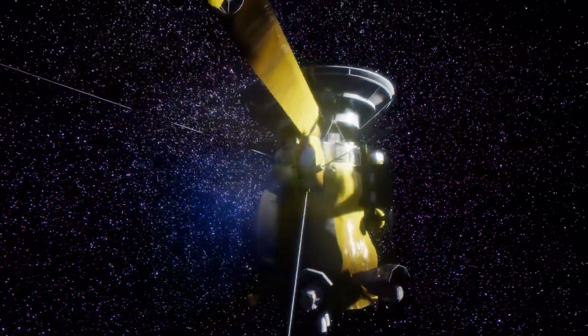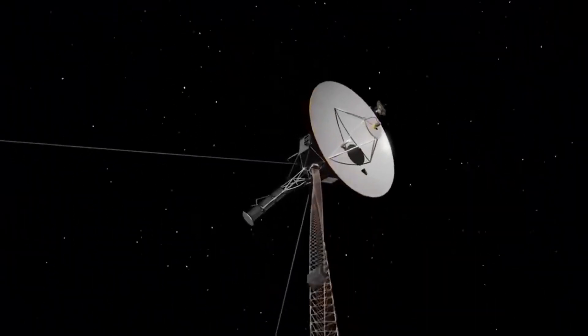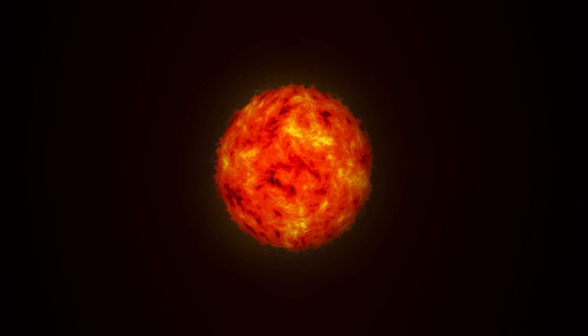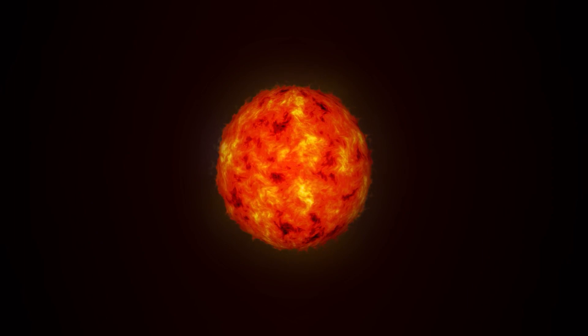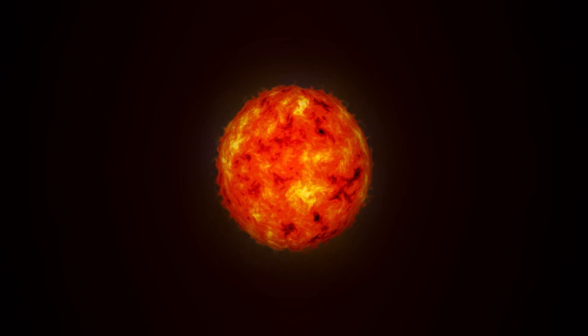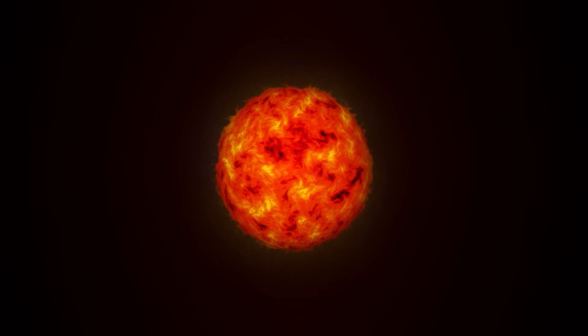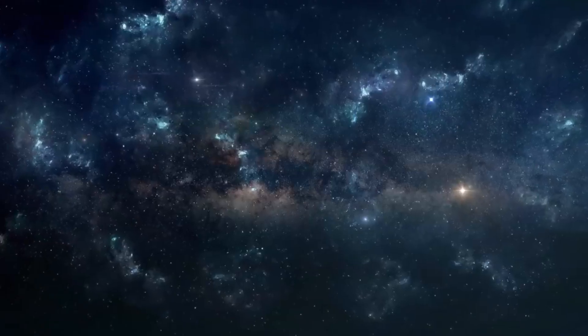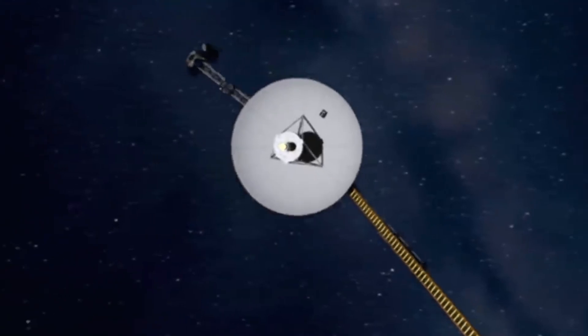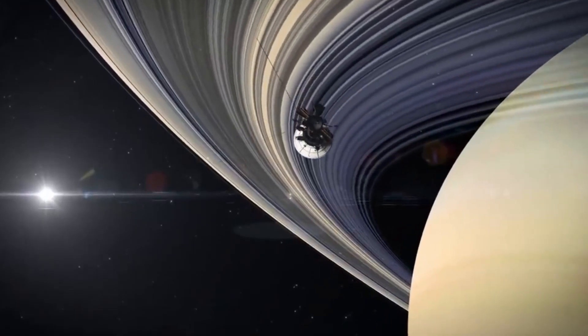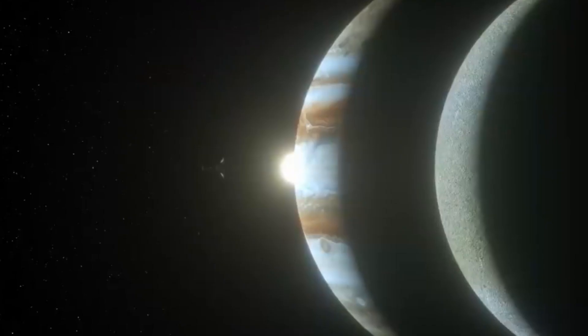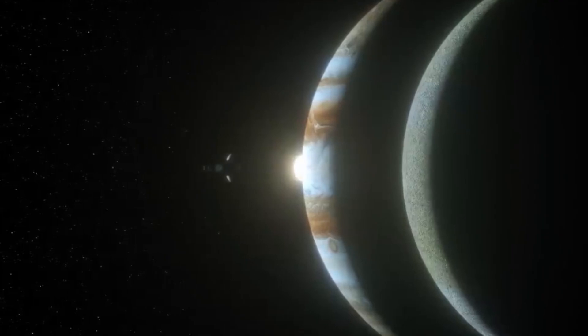Initially, Voyager 1's orbit had an aphelion of 8.9 astronomical units, 830 million miles, or 1.3 billion kilometers. The initial orbit of Voyager 2 fell very short of Saturn's orbit, with an aphelion of only 6.2 AU, or 580 million miles, 930 million kilometers.